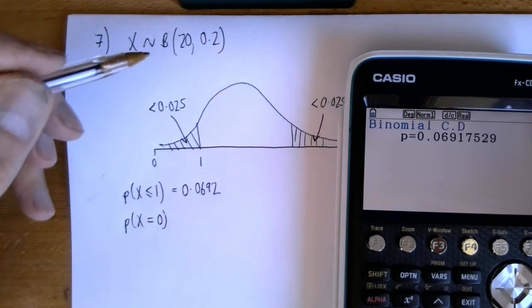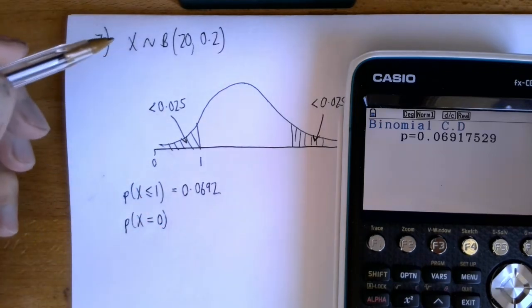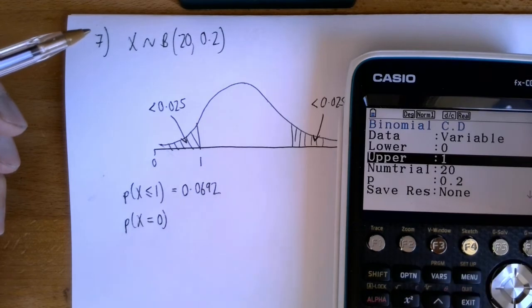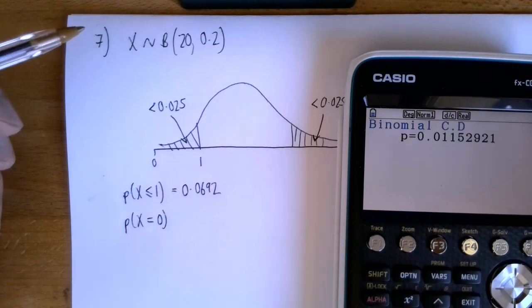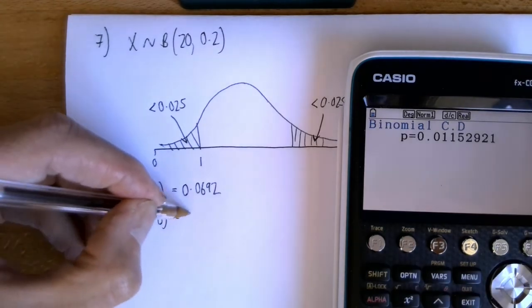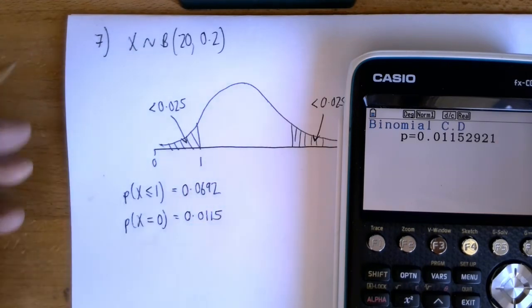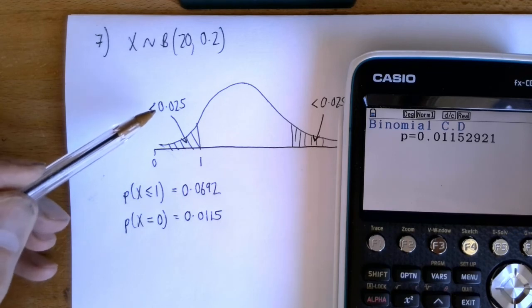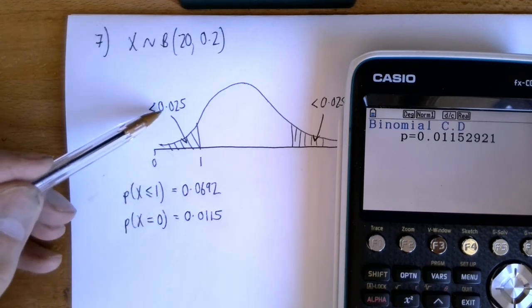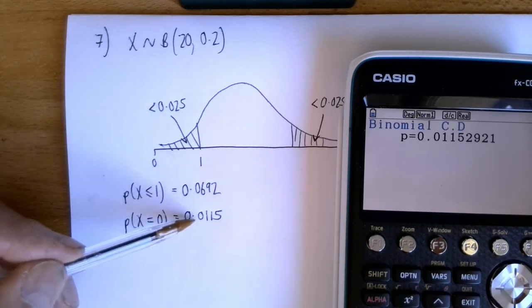probability—we might have no patients with complications—and I get that by just doing lower and upper of 0. So that's 0.0115. Now we were asked which probability gets us closest to 0.025, and it's this one here. So we get a really odd situation—there isn't a critical region at all. Well, there is, so the...